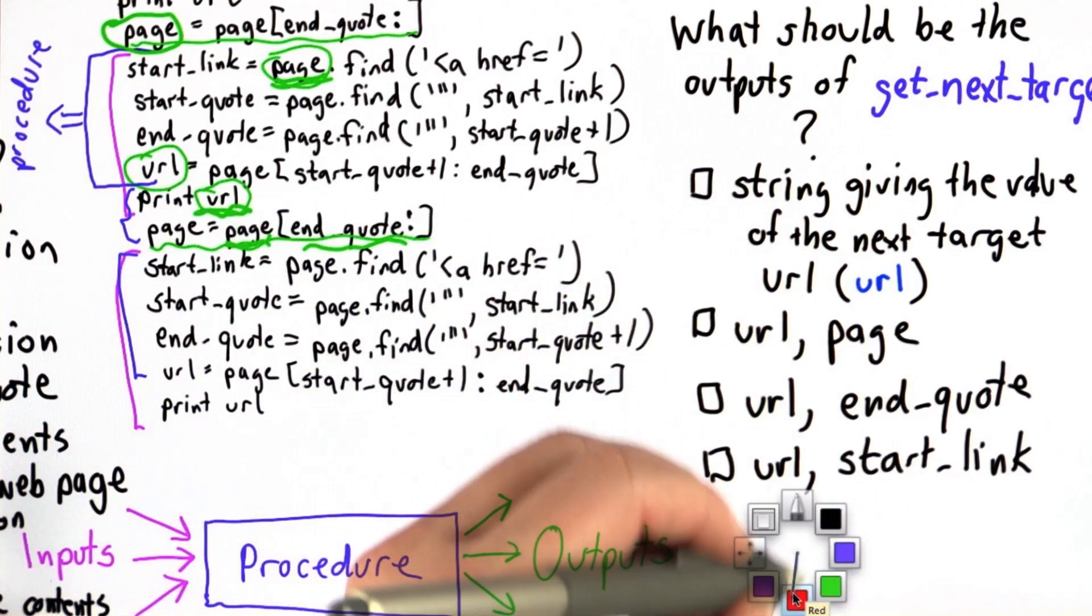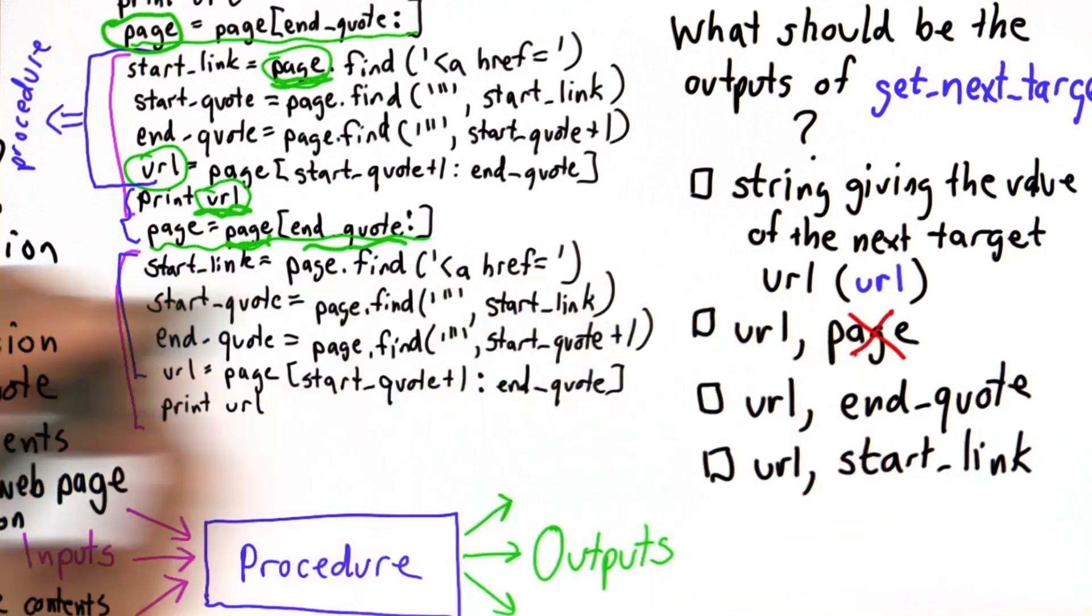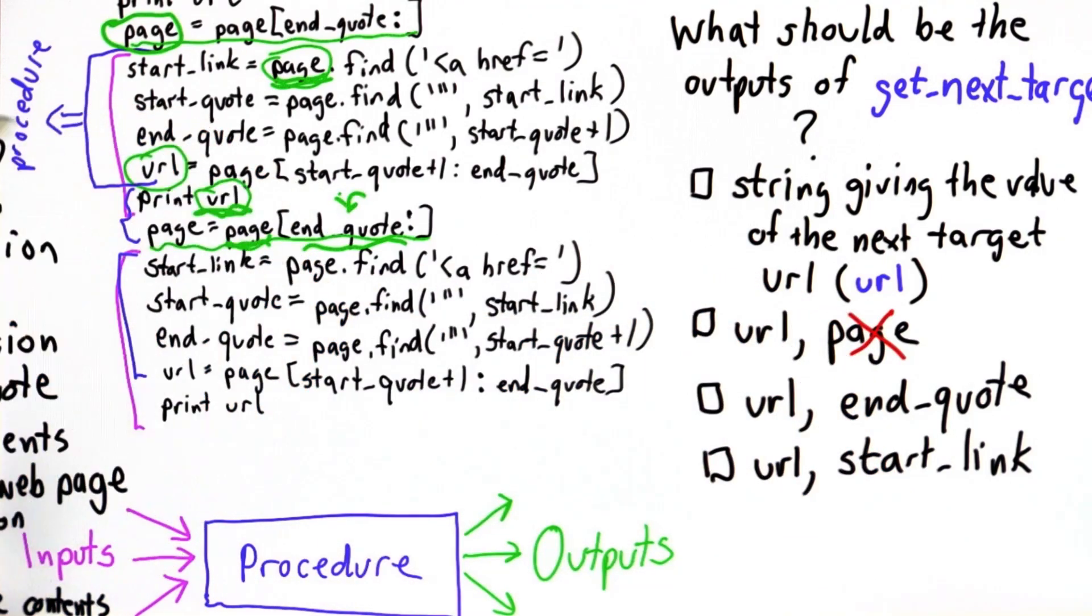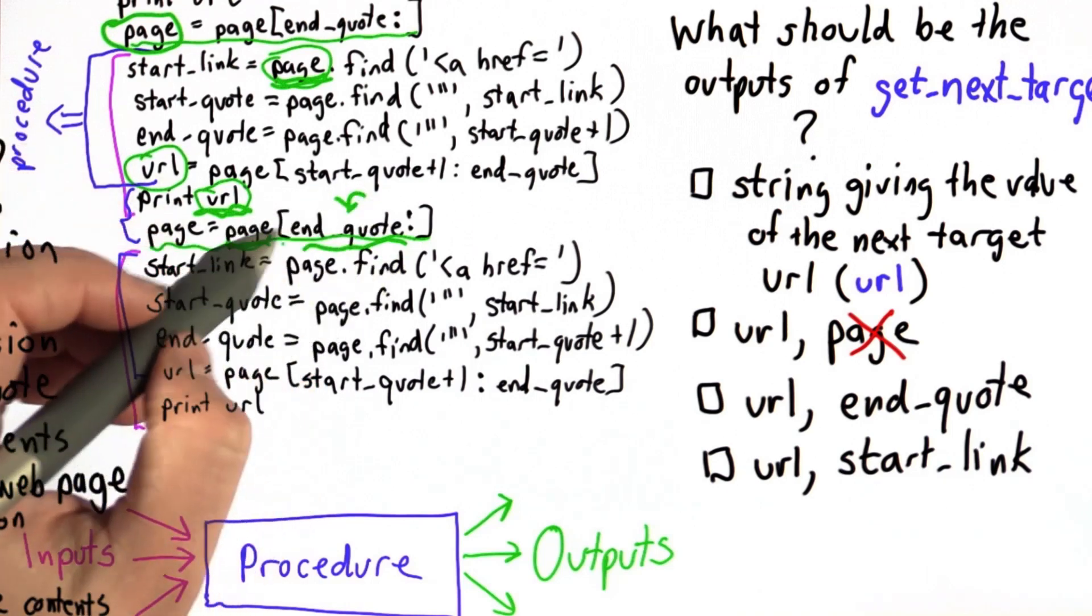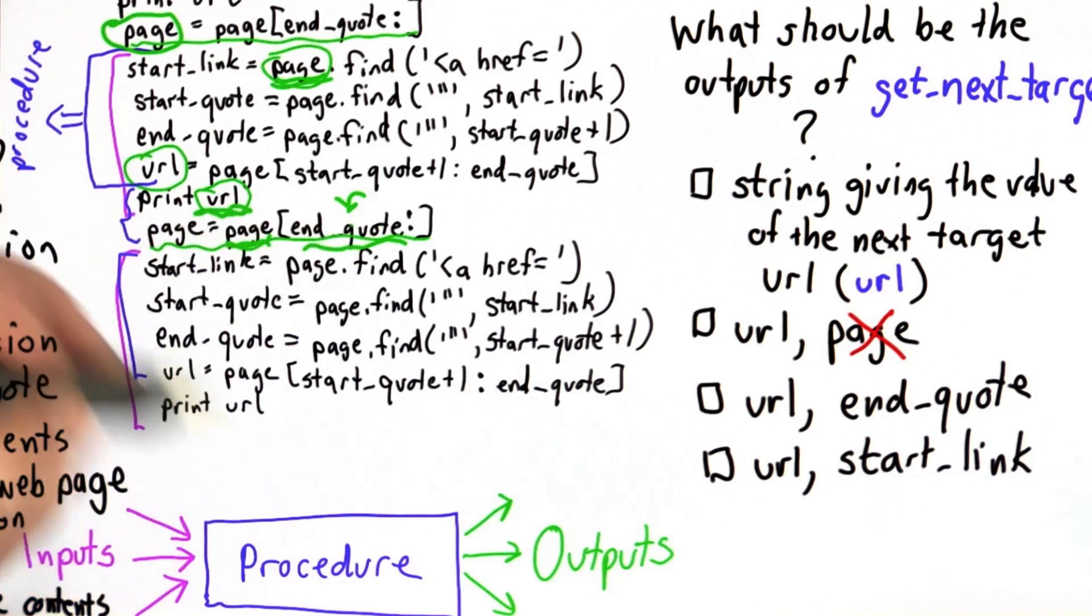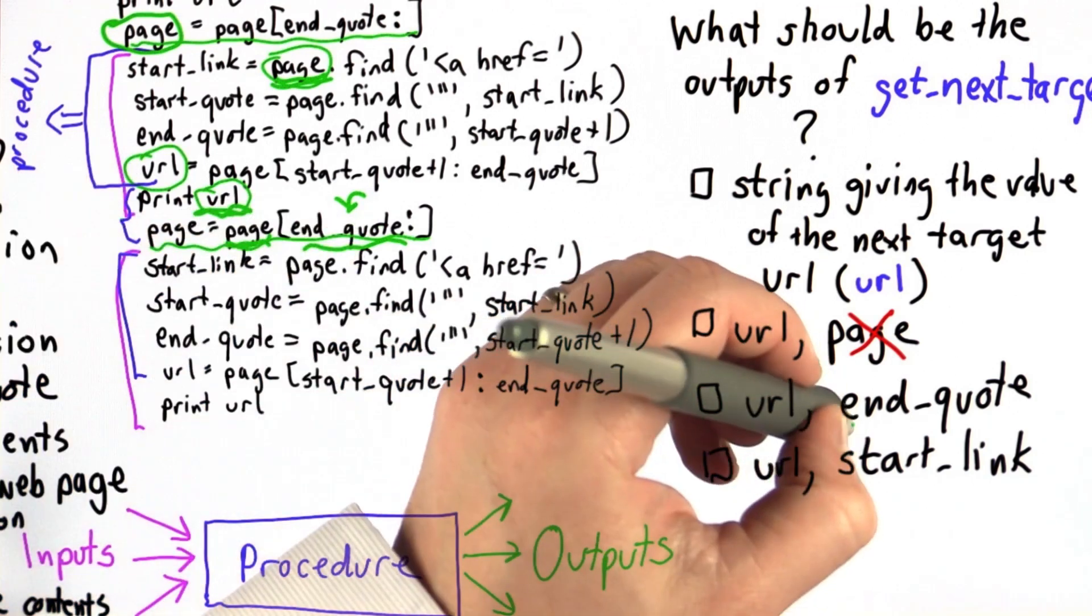So this answer doesn't make sense. We don't need page. It does make sense to make end quote one of the outputs. And the reason we want end quote as an output is we need to know where the end of the quote was to advance the page so the next time we look for the next target, we don't find the same one that we just found. So we actually need this.